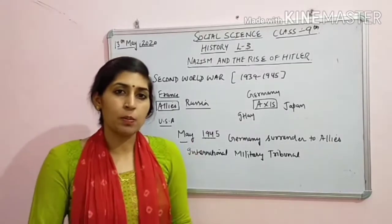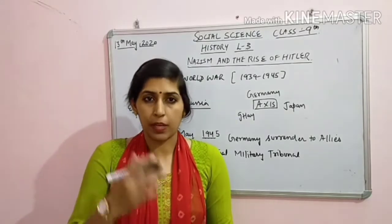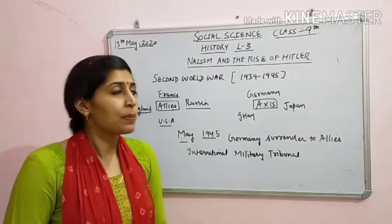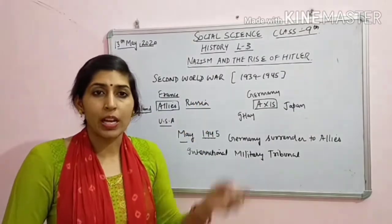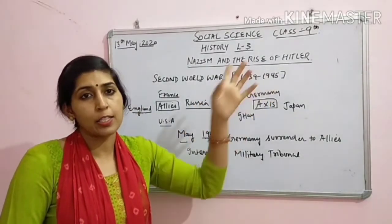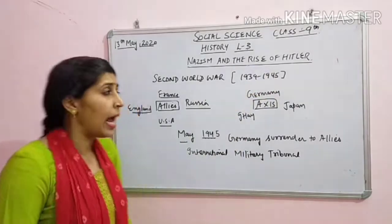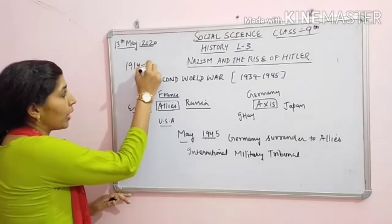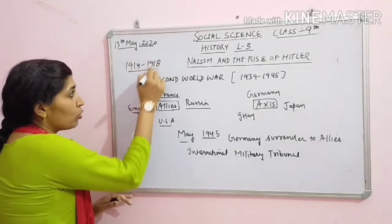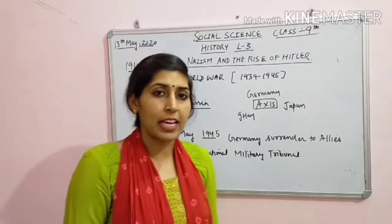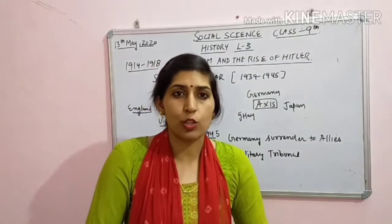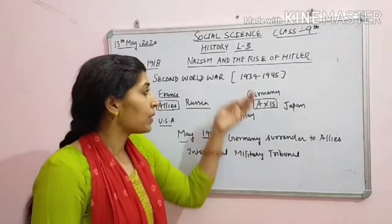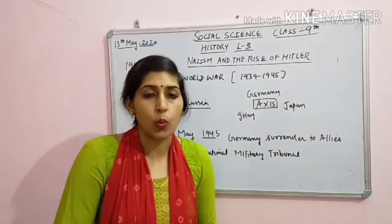Yoi chapter ki jab starting hoti hai, agar ham introduction ki baat karein, toh starting mein hume Second World War ke baare mein bataya jata hai. Second World War kab se kab tak hua tha? 1939 se 1945 tak tha Second World War. And if we are talking about the First World War, that is 1914 to 1918. Toh First World War ke baare mein bhi hum padhengi, lekin jo introduction hai, that is with the beginning of the Second World War.